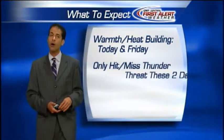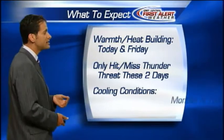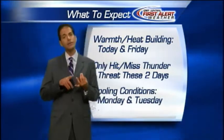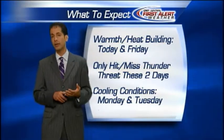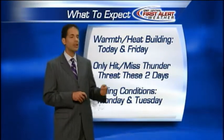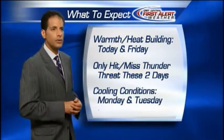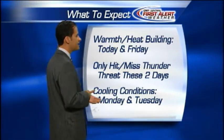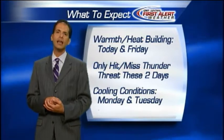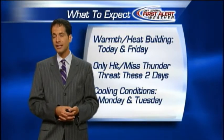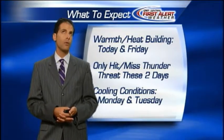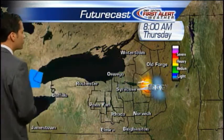The warmth and heat is building today and gets to its apex tomorrow, and potentially even Saturday. Today and tomorrow the threat for thunder is not zero, but it's not as high as it was yesterday when we had numerous showers and storms. The threat goes higher later Saturday into Sunday, then we have some cooling conditions. Much of the last two weeks we've either been way above normal or way below normal. We're way above normal today, Friday, and Saturday, still above normal Sunday, then below normal Monday and Tuesday.